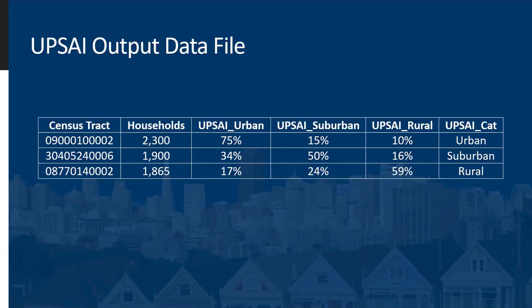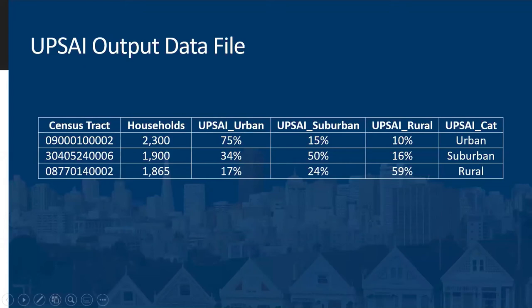Do you think a natural interpretation of that 75% number is to say that we predict 75% of the households in this census tract would describe their neighborhood as urban? I wouldn't go that far because this result is based off the average — I would just keep it at the tract-level estimate. In this example, there's a 10% probability that someone in that tract would say rural, which is quite low.